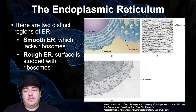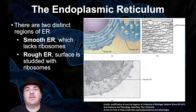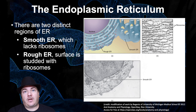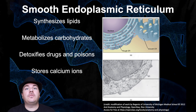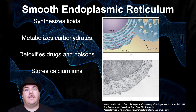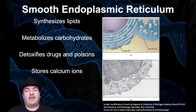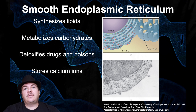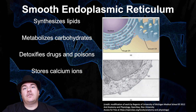All I've told you so far about the ER is its structure — what it looks like. I haven't yet told you what the purpose of the ER is, what the ER is doing for the cell. It turns out that the rough ER and the smooth ER have different jobs. The smooth ER synthesizes or makes lipids, it metabolizes or breaks down carbohydrates, it stores calcium ions, and it detoxifies drugs and poisons — if your cell is exposed to a drug or poison, your smooth ER is what handles that.